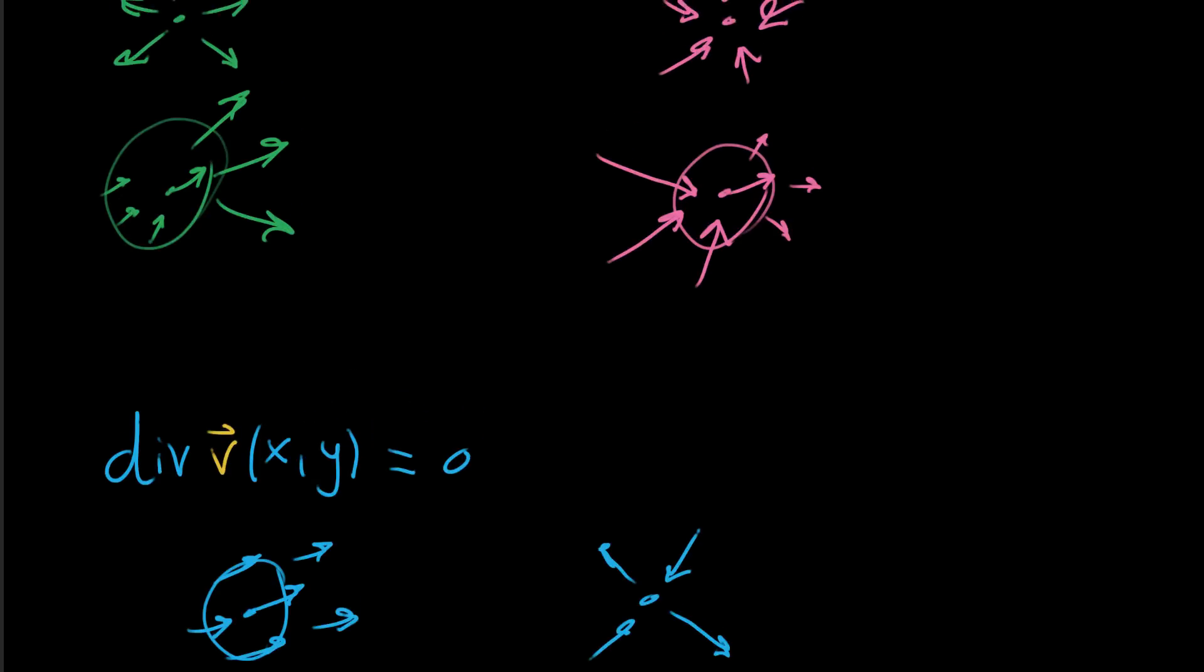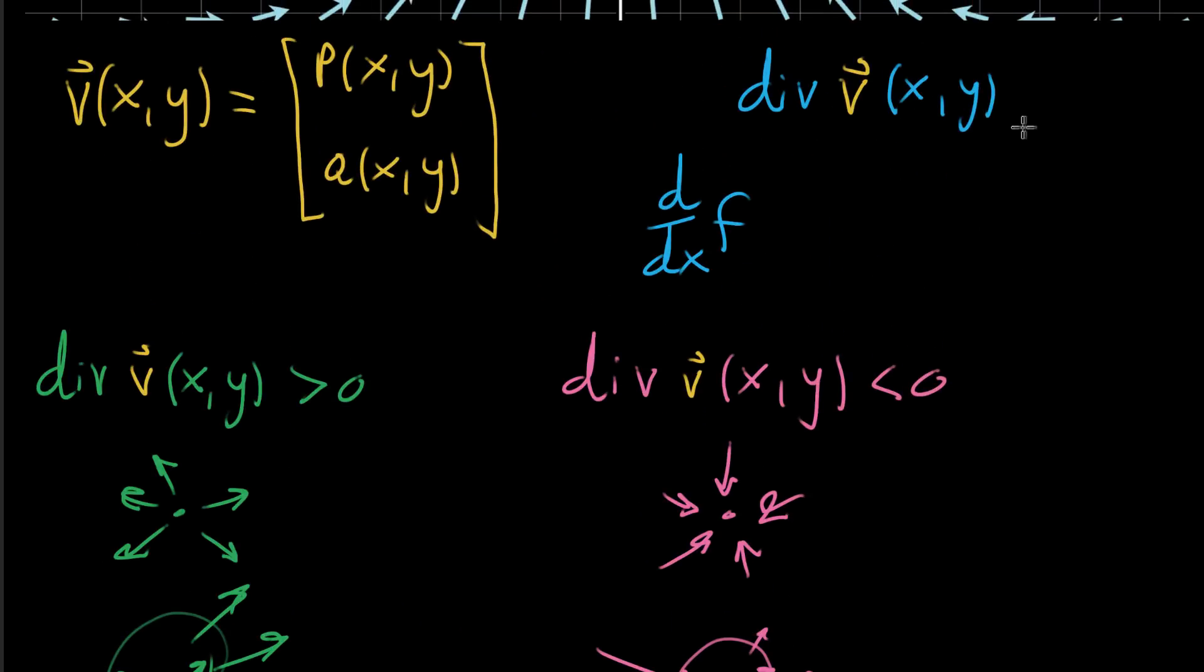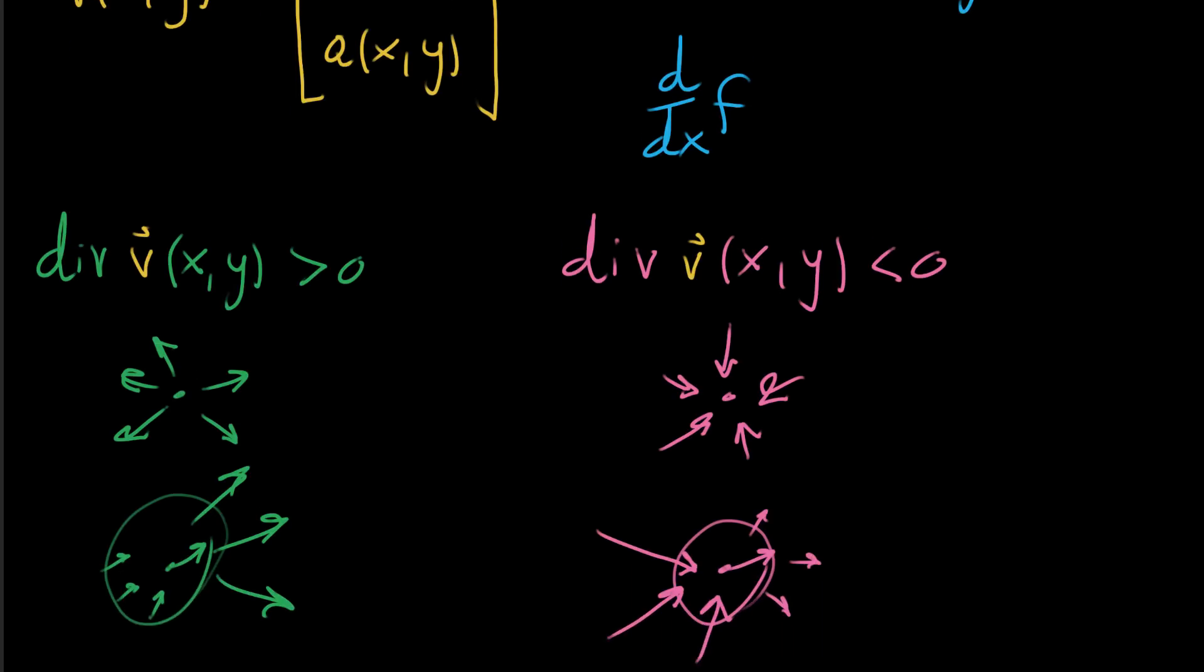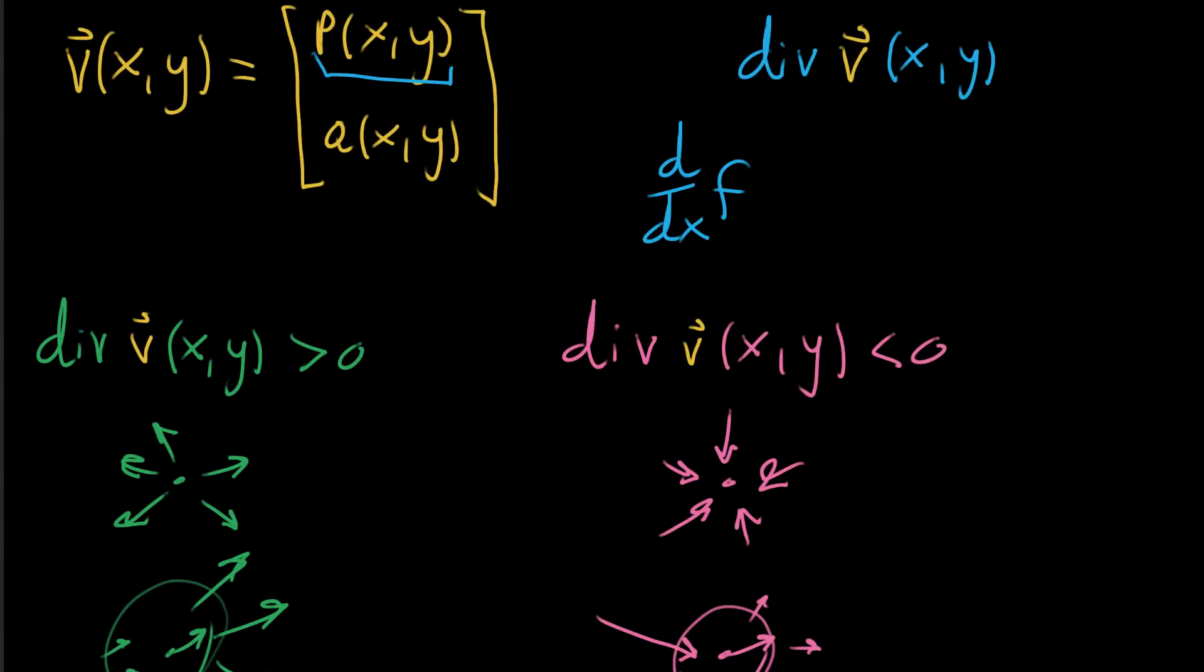So these are the loose pictures that I want you to have in the back of your mind as we start looking for the actual formula for divergence. And what I'll do in the next video or two is start looking at these functions p and q and thinking about the partial derivative properties that they have that will correspond with these positive divergence images that you should have in your head, or the negative divergence images that you should have in your head. So with that, I'll see you next video.